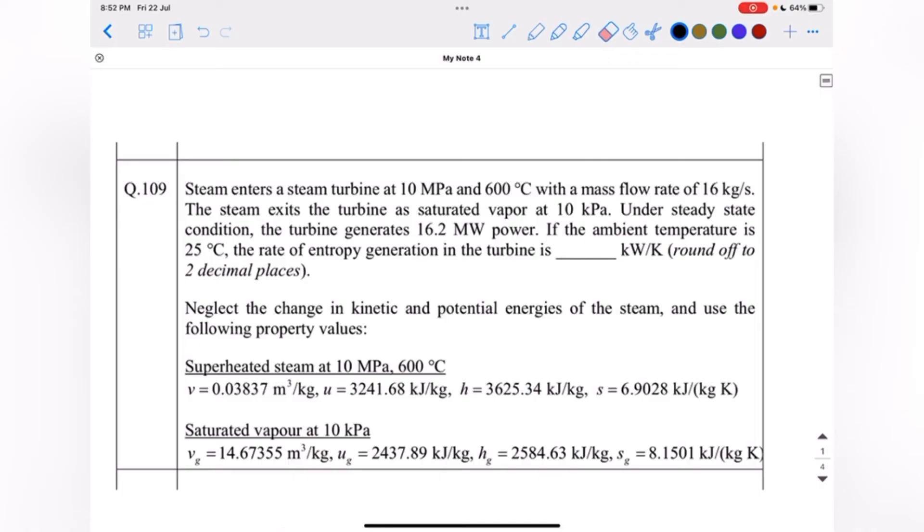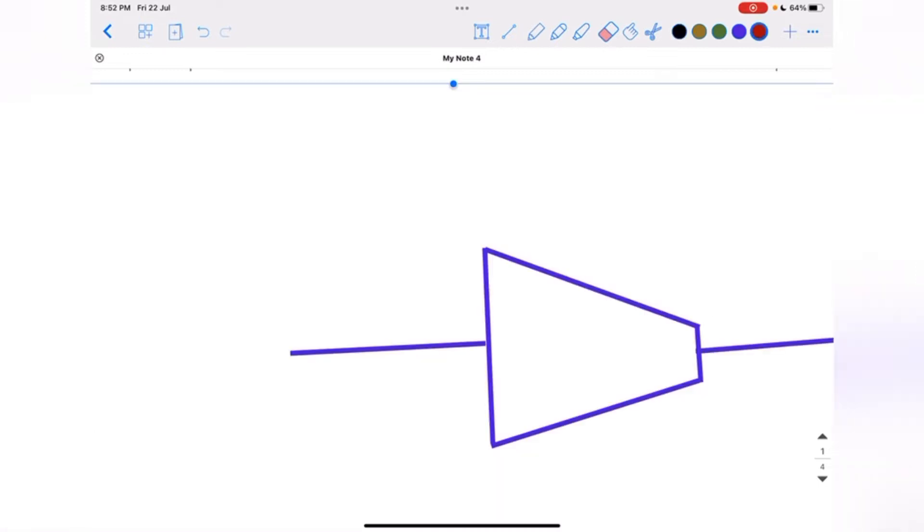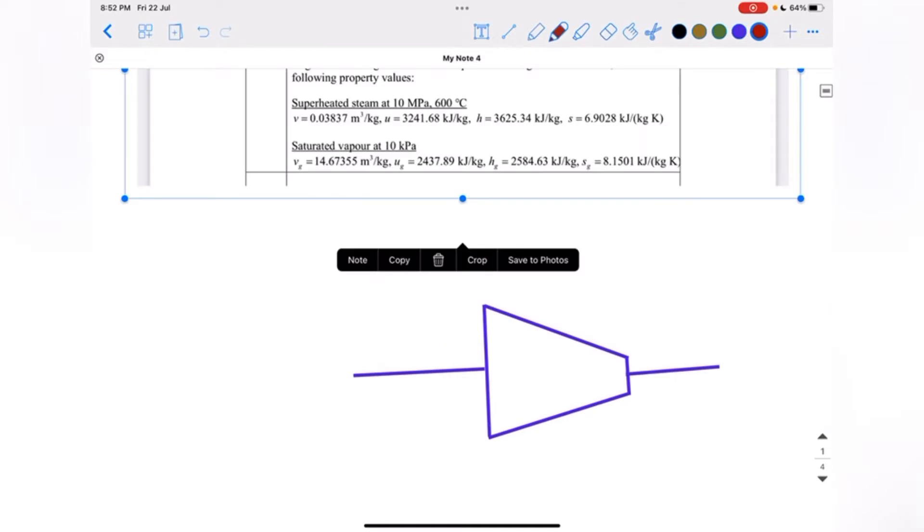This is the last question for Gate 2022 Engineering Sciences. It is given that steam enters a steam turbine at 10 megapascal and 600 degrees Celsius with a mass flow rate of 16 kilogram per second. So we start solving the question. We have a steam turbine. For state 1, it is given 10 megapascal and 600 degrees Celsius with a mass flow rate of 16 kilogram per second.